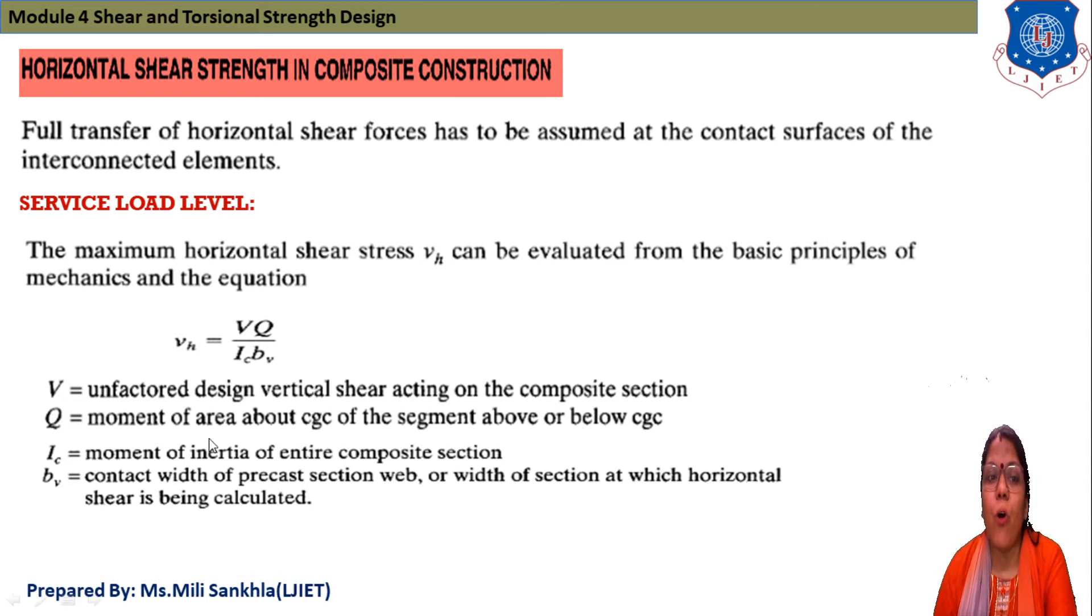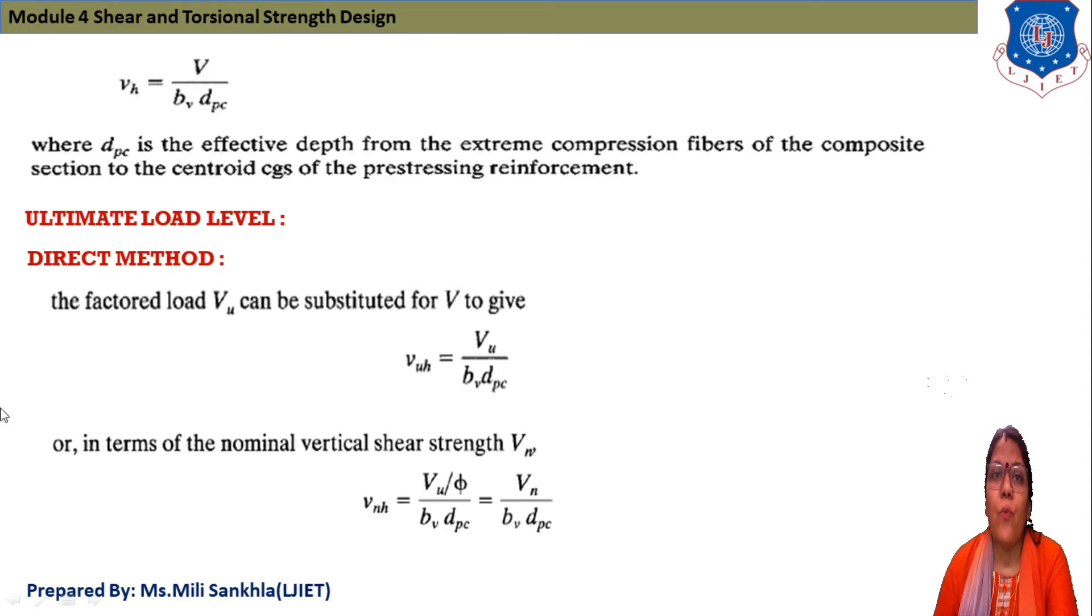Where V equals unfactored design vertical shear acting on composite section, Q equals moment of area about CGC of segment about or below the CGC level, Ic equals moment of inertia of composite section, and bv equals contact width of precast section web.